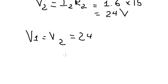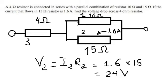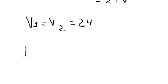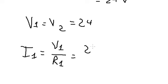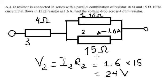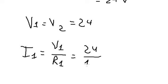So we can find I1. That's V1 divided by R1, and V1 is 24, R1 is 10, so we got 2.4 amperes.